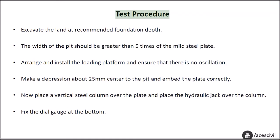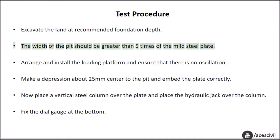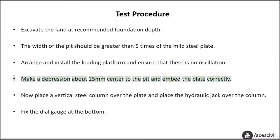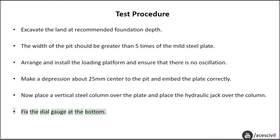Test procedure: Excavate the land at the recommended foundation depth. The width of the pit should be greater than 5 times the width of the mild steel plate. Arrange and install the loading platform and ensure there is no oscillation. Make a depression of about 25 mm at the center of the pit and embed the plate correctly. Place a vertical steel column over the plate and place the hydraulic jack over the column. Fix the dial gauges at the bottom.